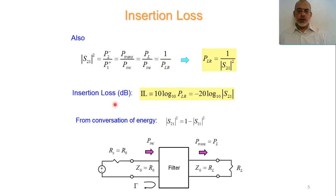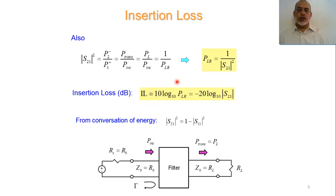The insertion loss in dB equals 10 log₁₀ of the Power Loss Ratio, which also equals -20 log₁₀ of |S21|. So the insertion loss equals the Power Loss Ratio in dB, which equals -20 log₁₀ of the transmission coefficient S21.